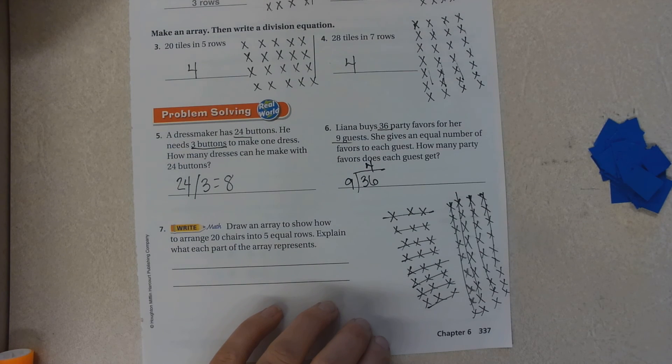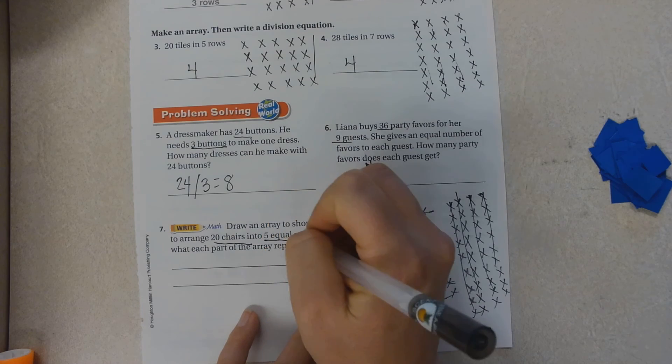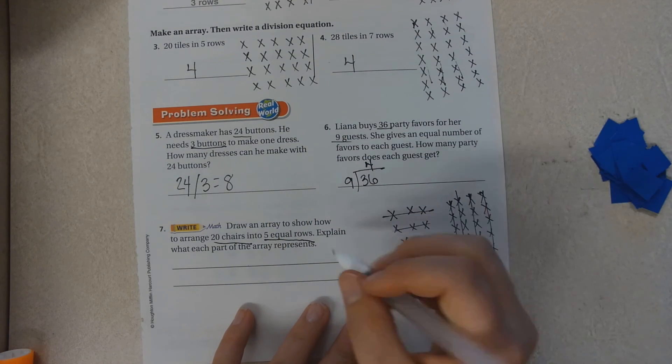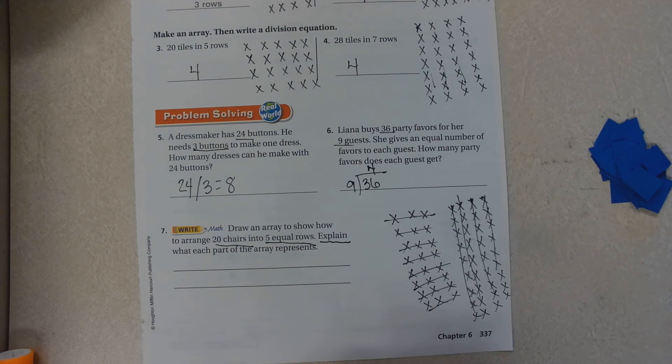Draw an array to show how to arrange twenty chairs into five equal rows, and you must explain. That means use words. Tell me what you did. This is all you, boys and girls.